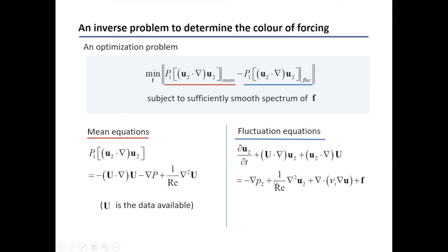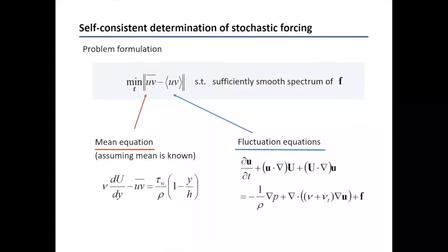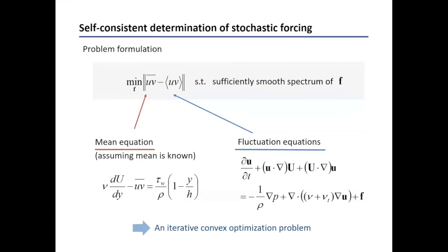Now I have to link this with the fluctuation dynamics. I formulate the fluctuation dynamics from the fluctuation equations and set up a minimization problem such that two quantities become very small, subject to a sufficiently smooth function F in both spectral space and physical space. In practice, due to the geometric homogeneity in streamwise and spanwise directions, the optimization can be formulated as an iterative optimization problem — ensuring spectral smoothness by adding penalty terms — and the penalty terms can also be further optimized.